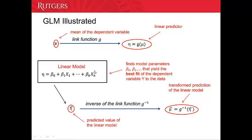You may notice there is no error term in this linear model. That is because the error is represented by the dependent variable's distribution. In this model we only use the mean of the dependent variable, so we don't include the variance, and therefore we don't have randomness from the dependent variable — which is why there is no error term.